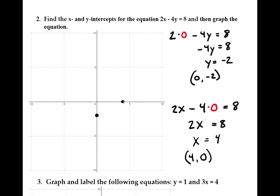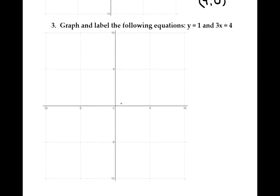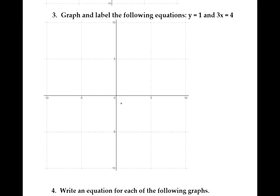The x-intercept is always a point on the x-axis, and the y-intercept is always a point on the y-axis. Once we have two points, we have enough to graph the line. This is the graph of the equation 2x minus 4y equals 8. We're not graphing the equation itself — we're graphing all of the solutions. Every ordered pair on that line is a solution to the equation; the graph is a picture of all the solutions.